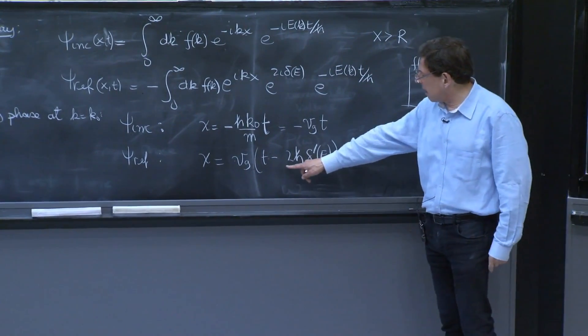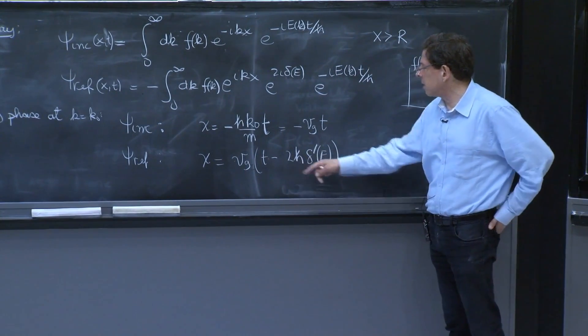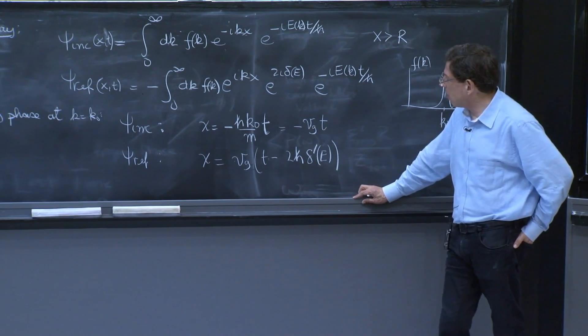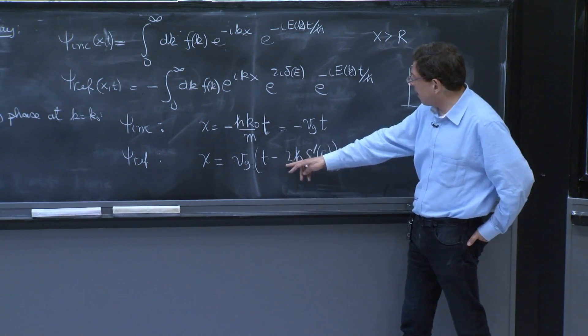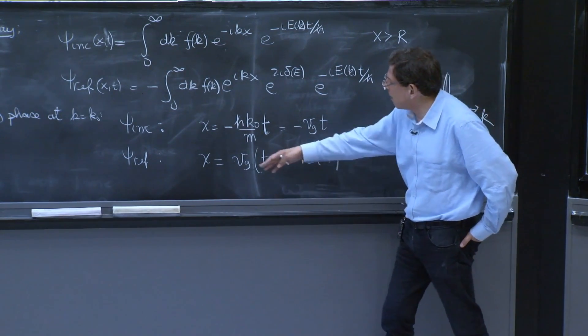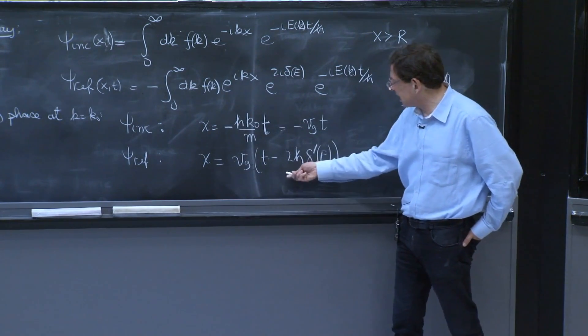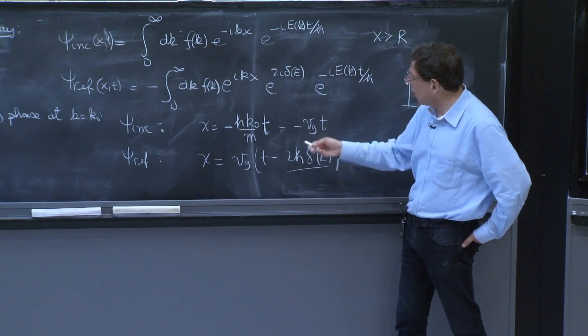But this, actually, there has an extra term subtracted. So only for t greater than this number, the particle begins to appear. So this is a delay, t minus some t0.